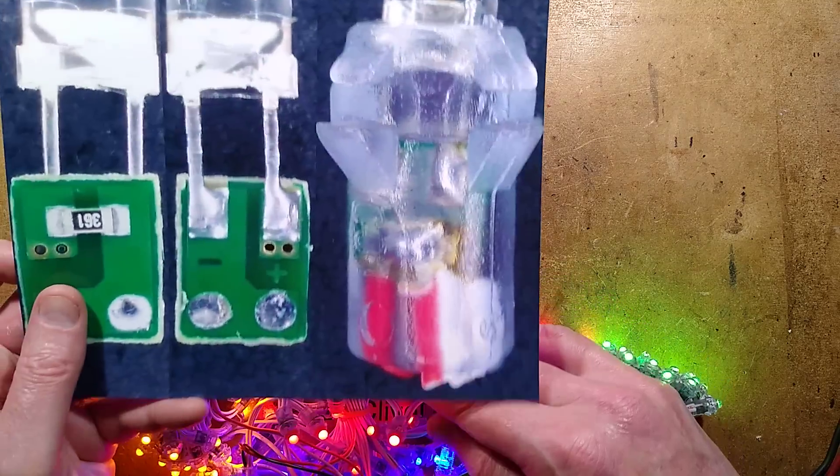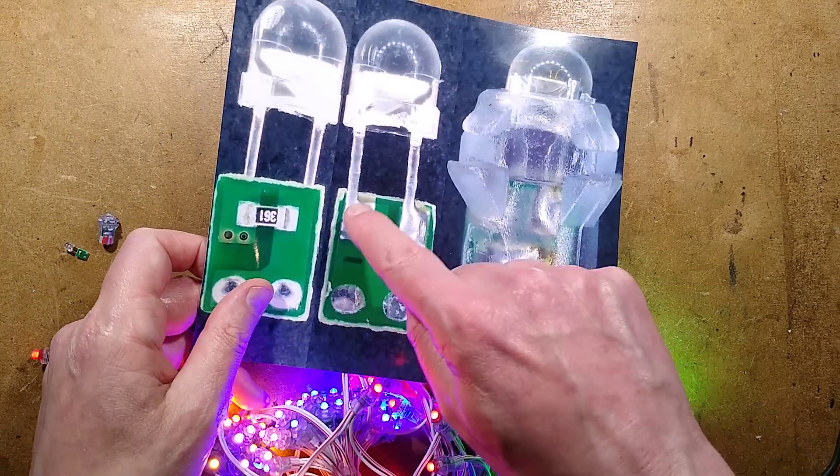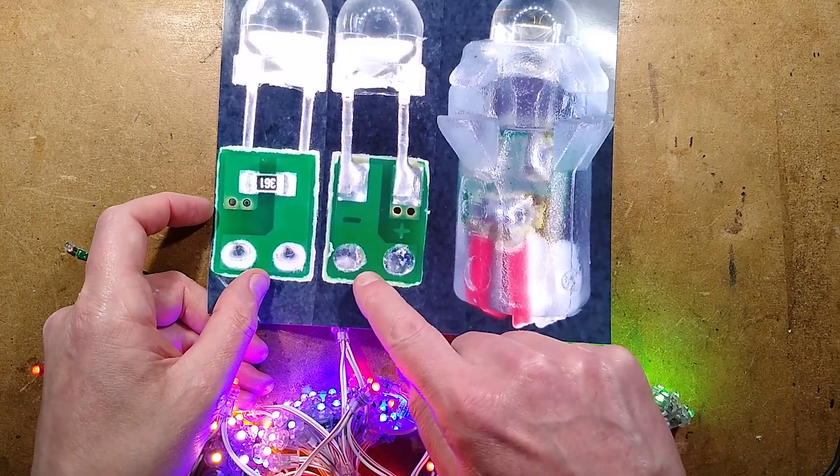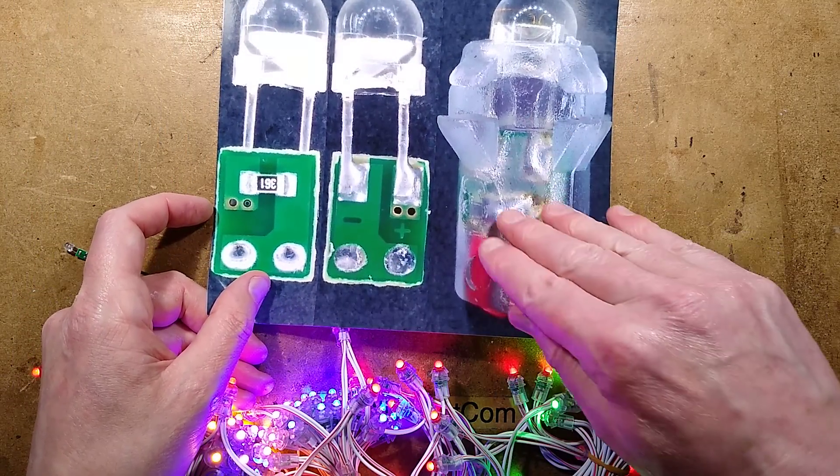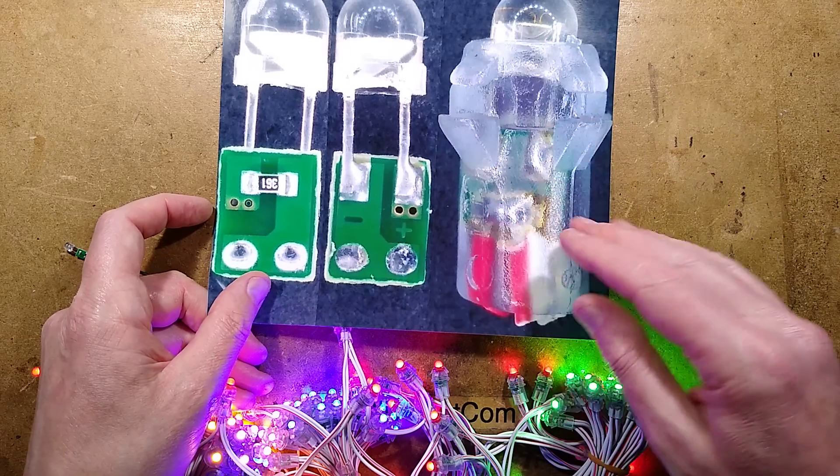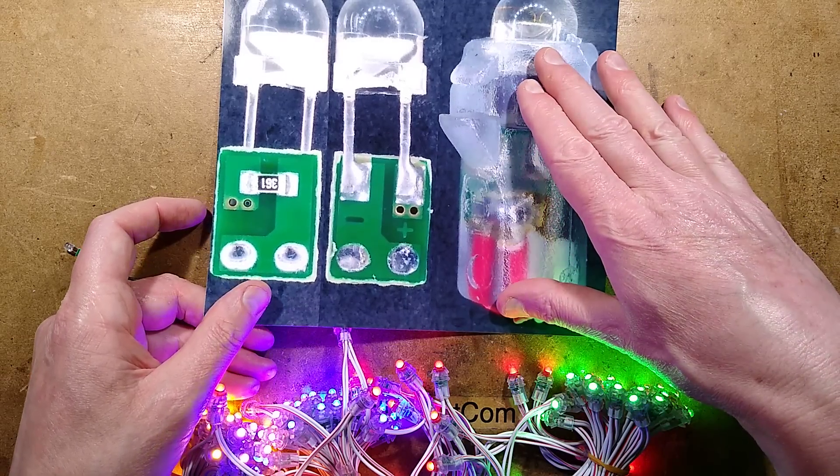It's also worth mentioning the way these are constructed. The LED and circuit board is put into a mould, and then it literally injection moulds the plastic around these. That's why they can pot it in so tightly.